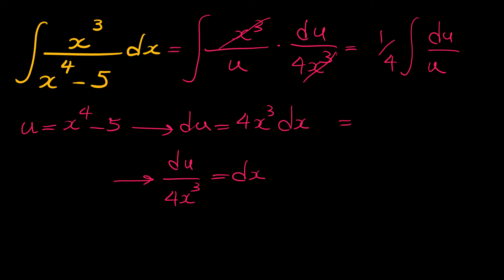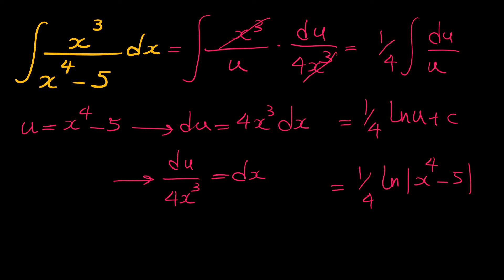We know that the integral of du over u is ln of u. And if we substitute u back with x⁴ minus 5, the answer is one fourth ln of x to the 4 minus 5, plus C.